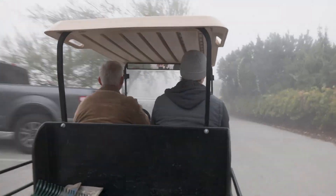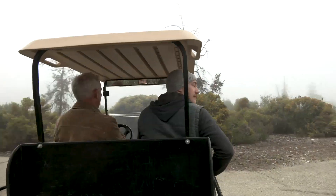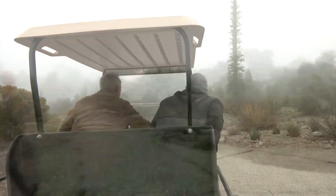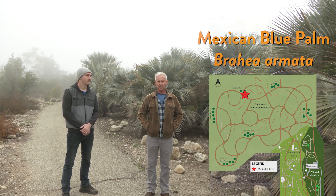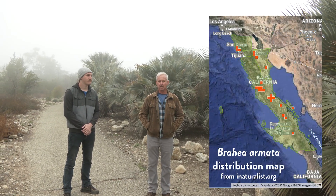Now that we've seen the map, let's take a look at the living collection in the garden. It's a cold morning in the garden today. So here we are at our Grove of Blue Palms, Brahea armata, and they grow in the arroyos and canyons of northwestern Baja California.